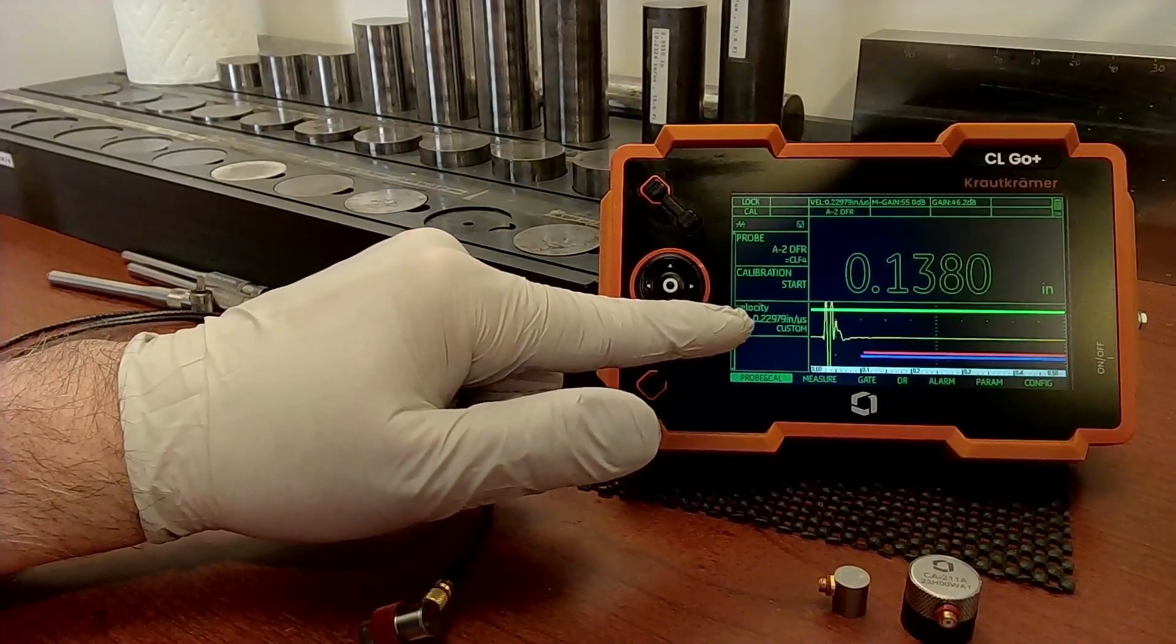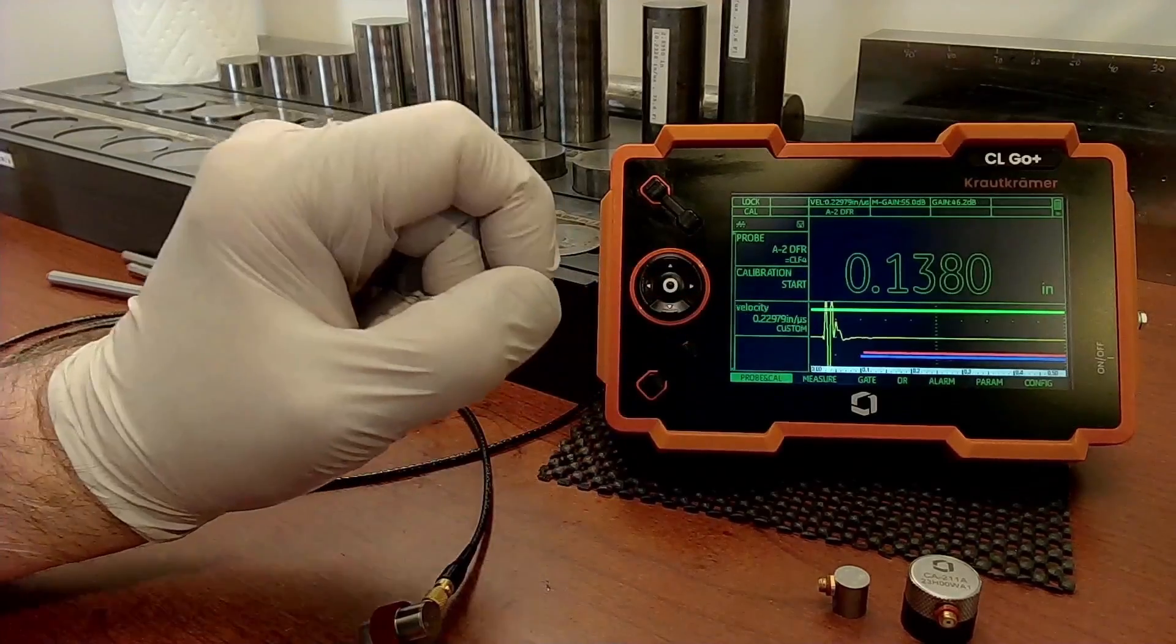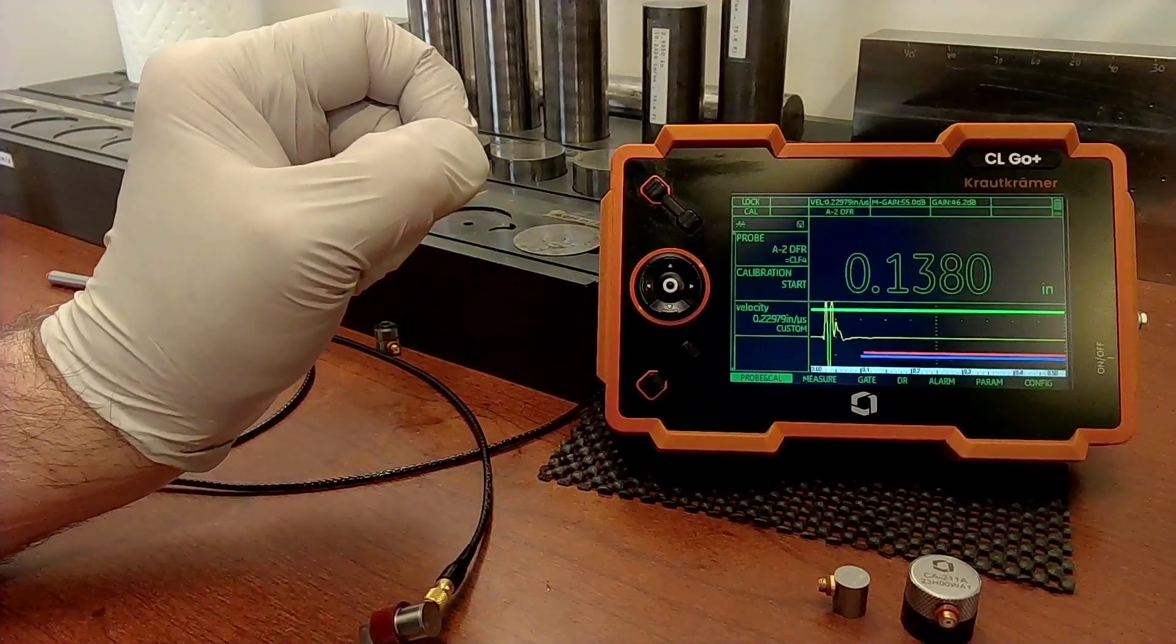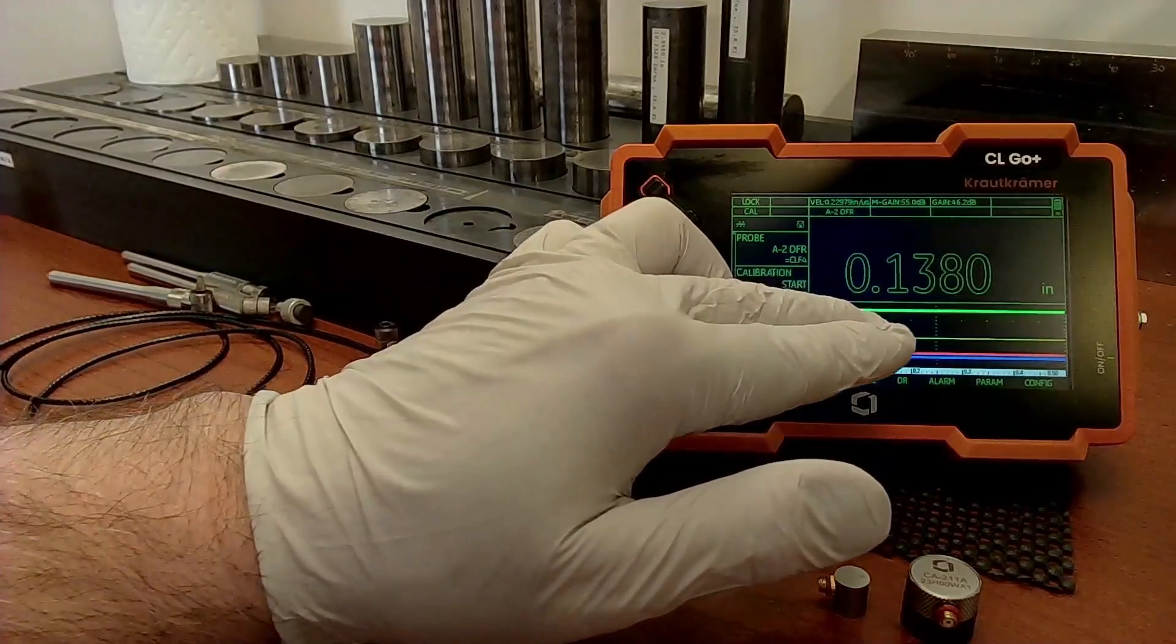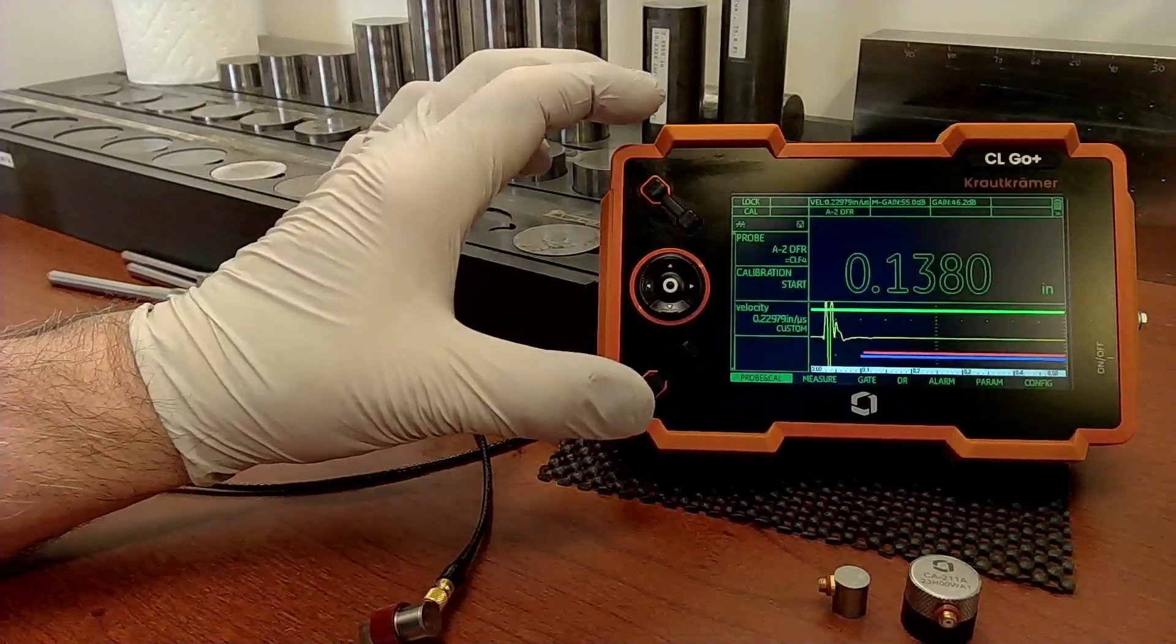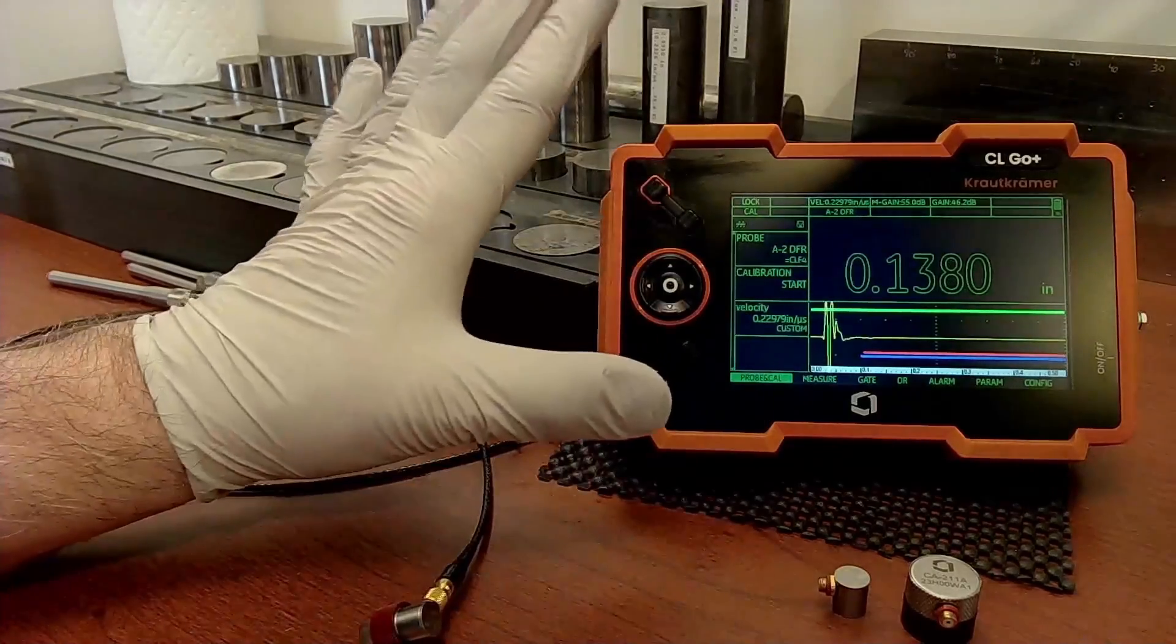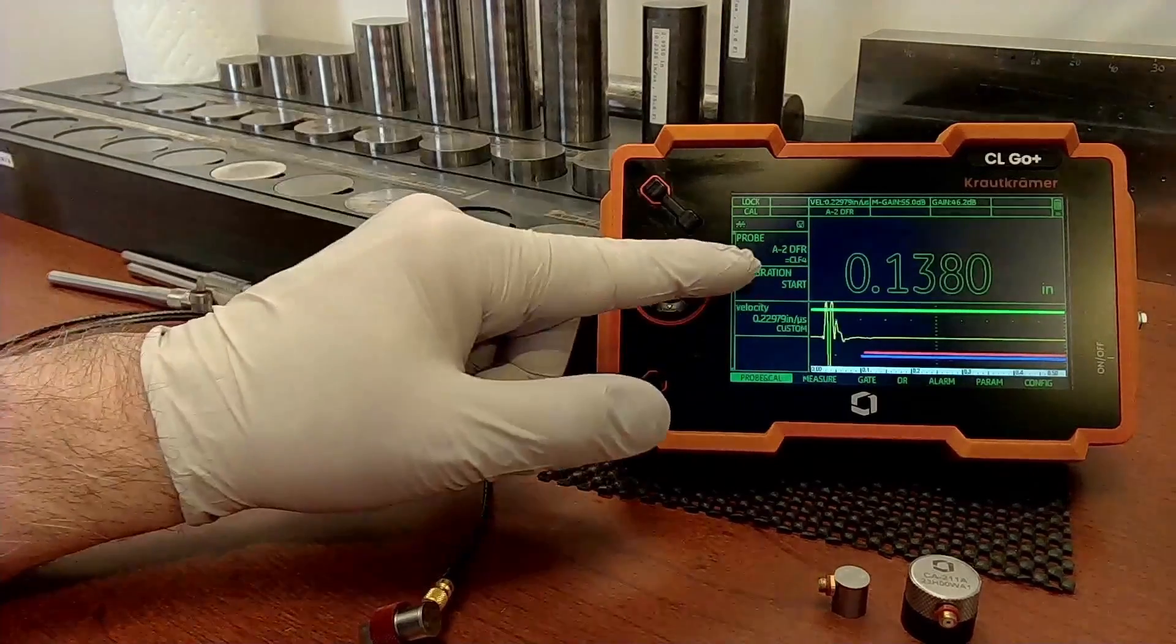Right now I'm working with the simplified menu set. On the CL Go we have all of the options and setup capabilities that would be familiar to a user of the DMS Go. So we have a very robust set of controls around gate positions, gain control, things like that. The instrument can be kept in a very simple operating mode. And we can hide almost all of that complexity. In this simplified mode, we call it inspector mode.